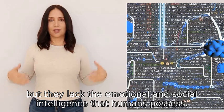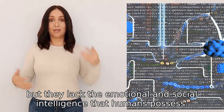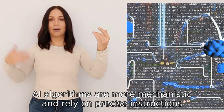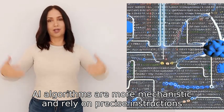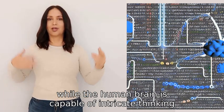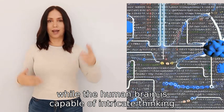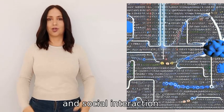In summary, AI algorithms are more mechanistic and rely on precise instructions, while the human brain is capable of intricate thinking, creativity, and social interaction.